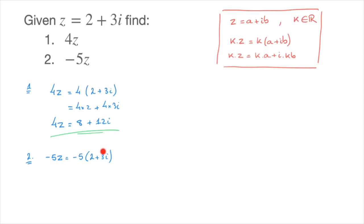we simply distribute this negative 5 across the parentheses, which leads to negative 5 times 2 minus 5 times 3i. In other words, negative 5z is equal to negative 10 minus 15i. And that's the final answer.